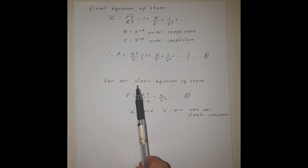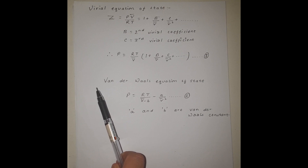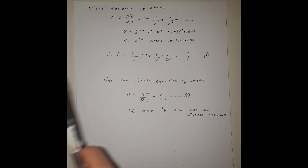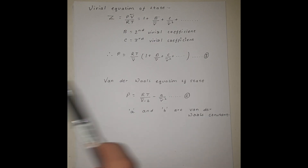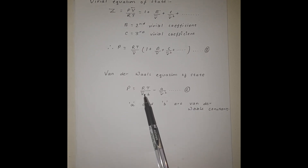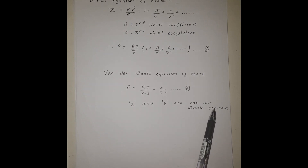The second equation of state we are concerned about is the Van der Waals equation of state, which is a cubic equation of state particularly useful for describing both liquid and vapor phases. The equation contains V with an overline as the molar volume, and a and b as the Van der Waals equation's constants.